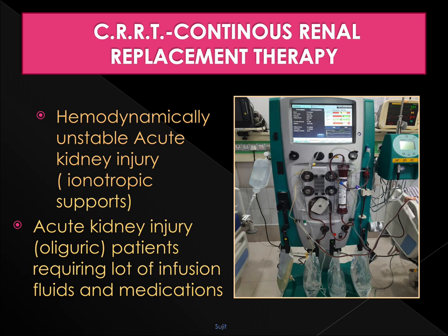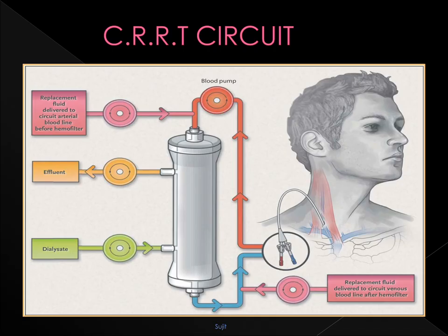Continuous renal replacement therapy includes a spectrum of dialysis methods developed specifically for treatment of critically ill patients with acute kidney injury who could not undergo traditional intermittent hemodialysis because of hemodynamic instability, or in whom intermittent hemodialysis could not control volume or metabolic derangements. The slower solute clearance and fluid removal per unit of time with CRRT compared with intermittent hemodialysis is thought to allow for better hemodynamic tolerance. CRRT requires a central double-lumen venous catheter, an extracorporeal circuit, a hemofilter, a blood pump, and an effluent pump. The blood circuit for CRRT is usually a venous-venous circuit.